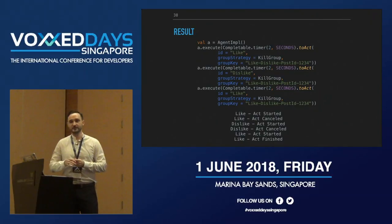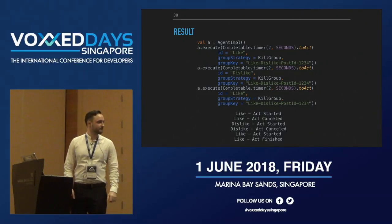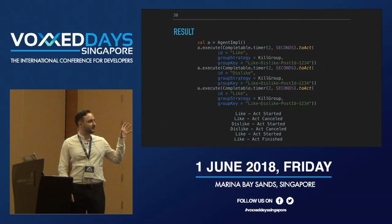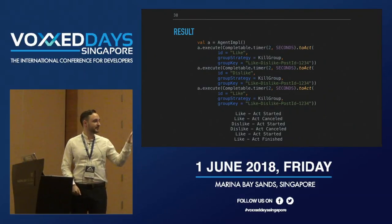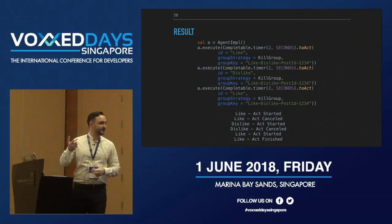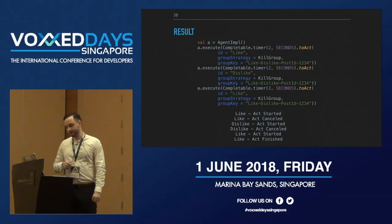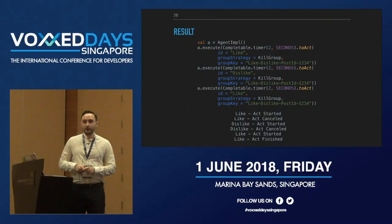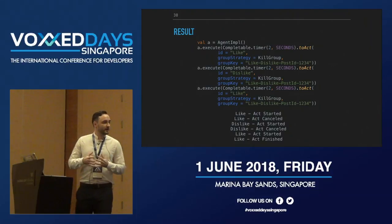The group key can be any string as long as it's the same for the group and is understandable. In the example, we execute like/dislike/like with the same group, and in the logs we see: liking starts, disliking starts, liking starts again, and the first two are cancelled — only the third one finishes. We've achieved our goal of handling complex behaviors with a simple implementation, and the solution is extensible.